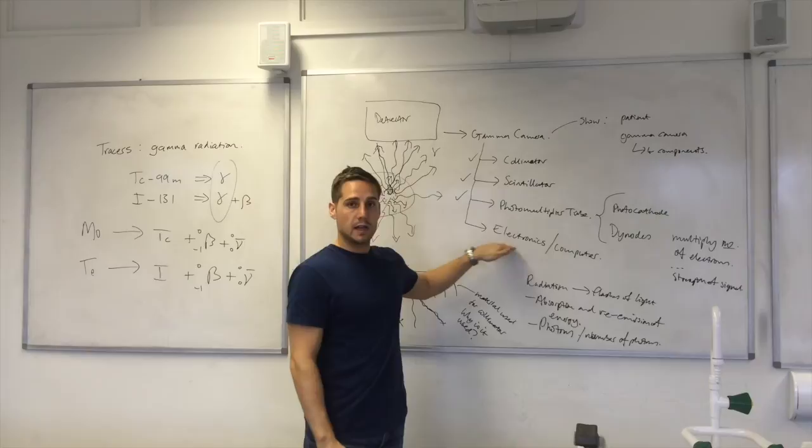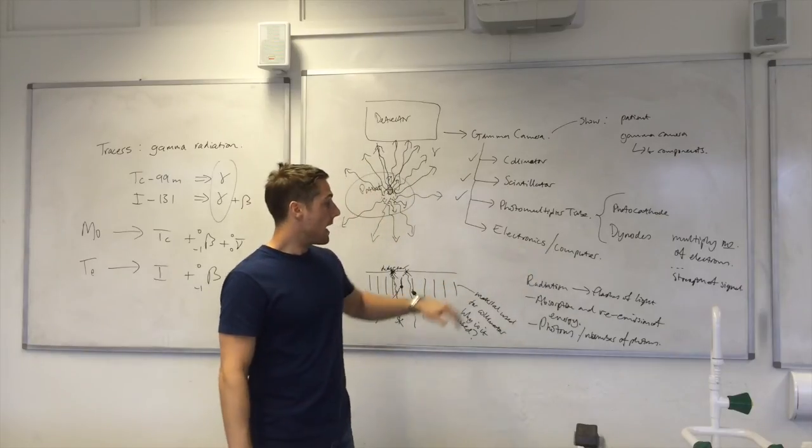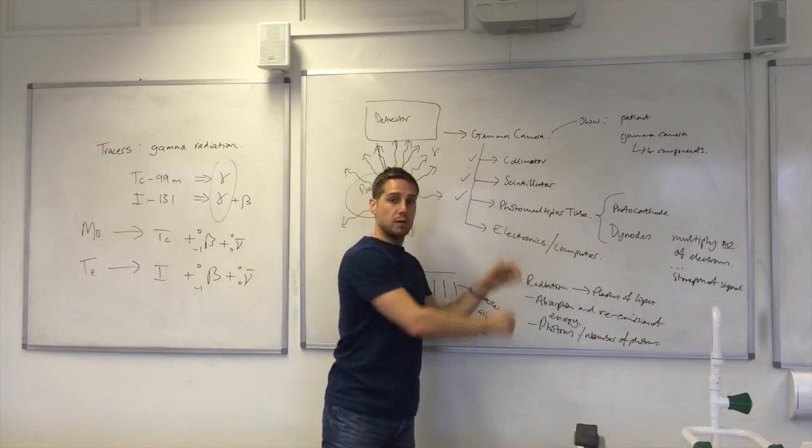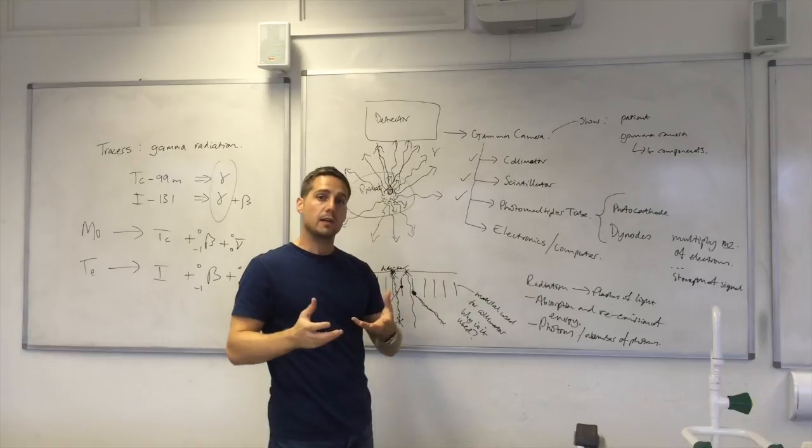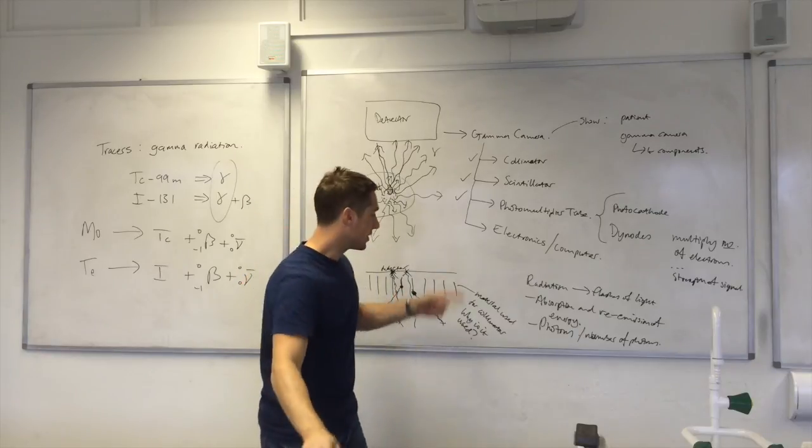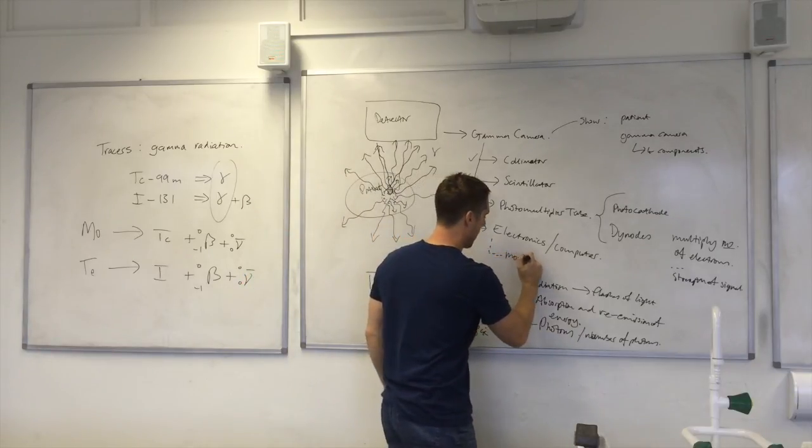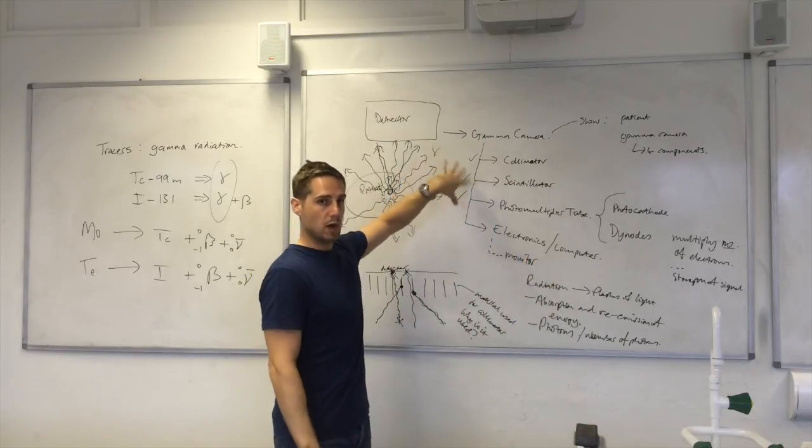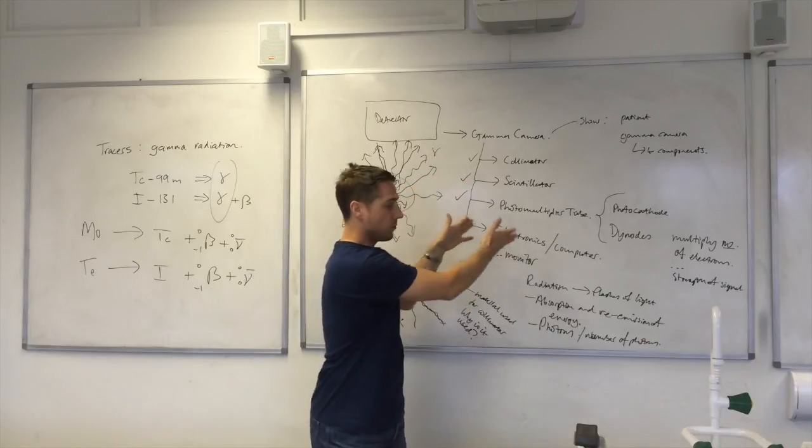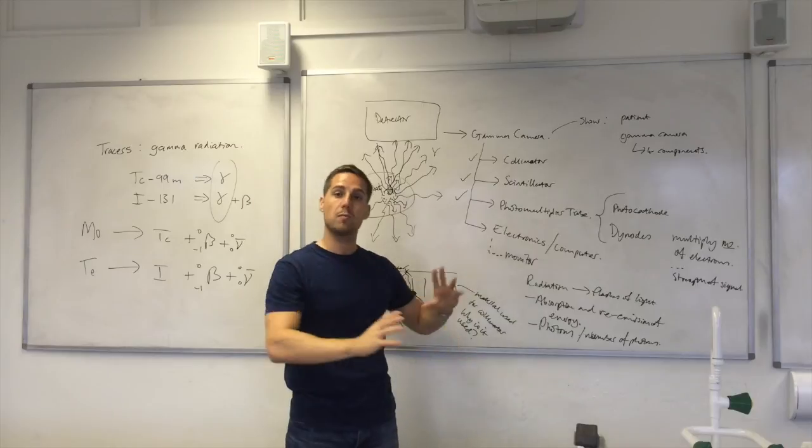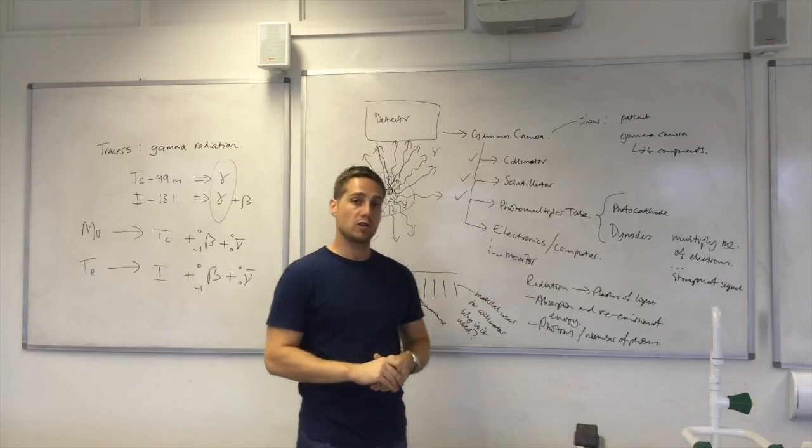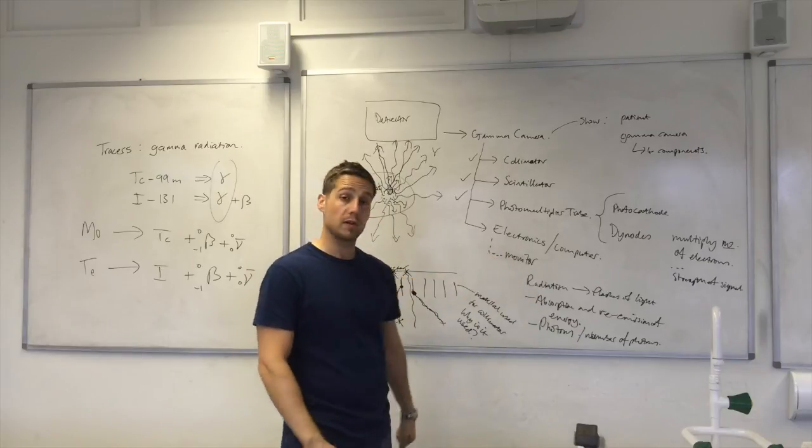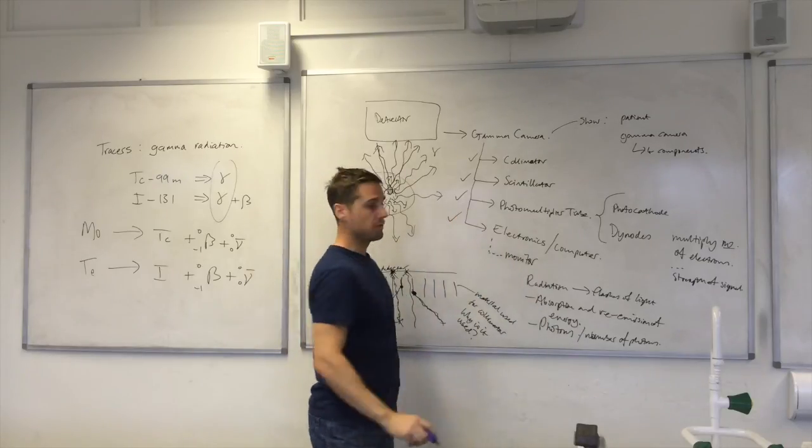Then you have the electronics or computer stage. And what this stage does is it gathers the information from the photomultiplier tubes and processes it, turns it into an image which it displays on a monitor. So there is actually a fifth stage but it's not crucial to the working of the camera. So we process the information from the photomultiplier tube. It's put on the monitor so that the radiologist can interpret what's happening inside the body from the monitor. And that is our fourth and final stage.